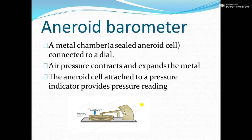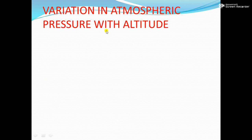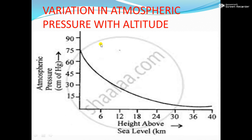That is all about the instruments used to measure atmospheric pressure: simple barometer, Fortin barometer, and aneroid barometer. Next is variation in atmospheric pressure with altitude. How to take measurements we have already discussed.